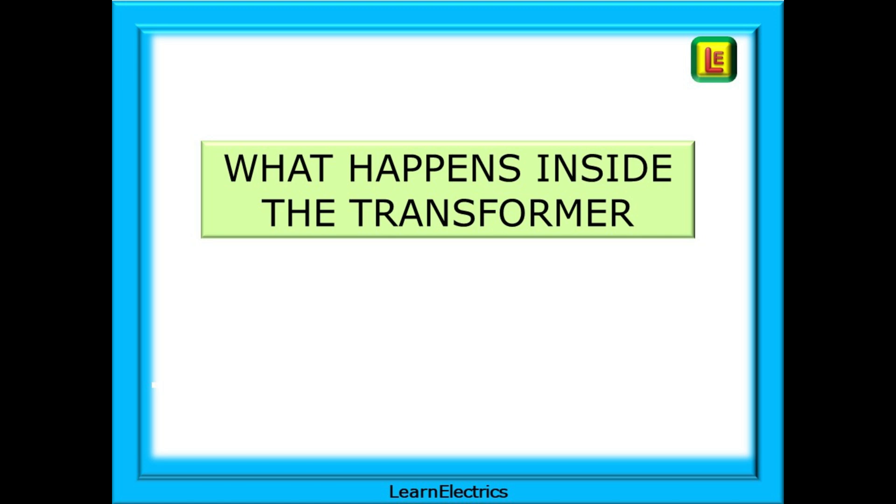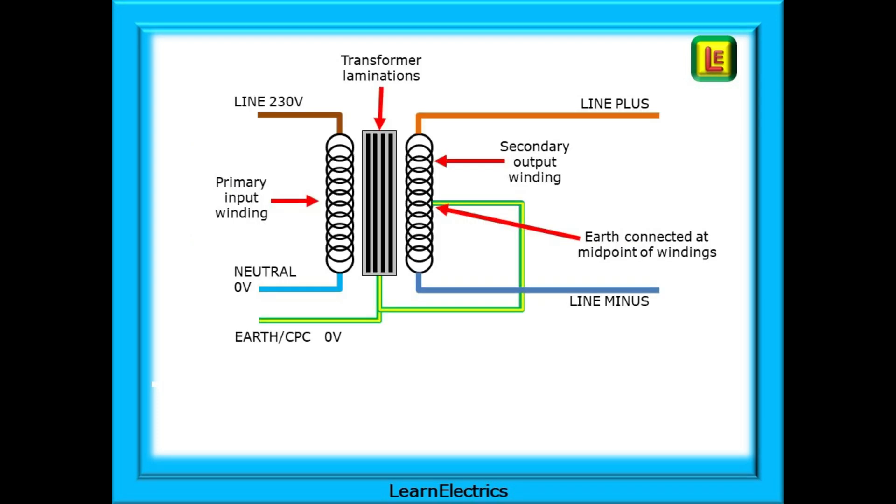We can move on now to what happens inside the transformer, the big yellow box. How does the wiring of the transformer keep us safe if something goes wrong on site? This drawing shows the two electrical windings inside the transformer and their associated wiring, and also the laminations - the metallic core that acts as the electromagnetic transfer material. It is the metal laminations that make the transformer heavy.